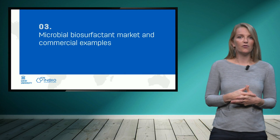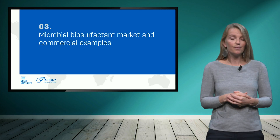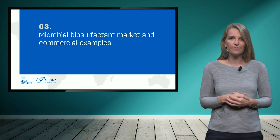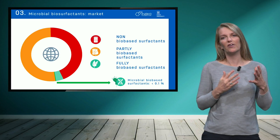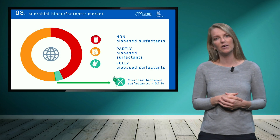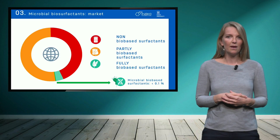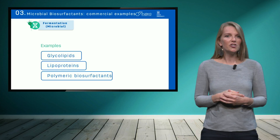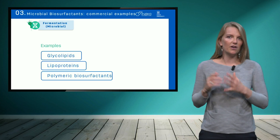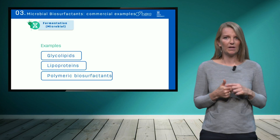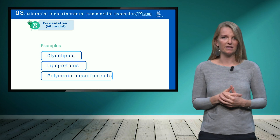These advantages have resulted in the commercialization of a number of microbial biosurfactants, although in very small amounts as can be seen here. Only a very small part of the biosurfactant market is represented by microbial biosurfactants. The commercialized microbial biosurfactants can in general be subdivided into three main groups: glycolipids, lipoproteins, and polymeric surfactants.